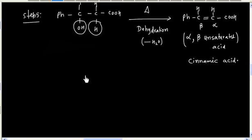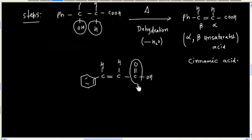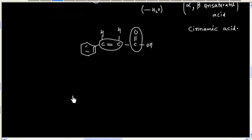The final product has extended resonance. This double bond, this double bond, and the double bond inside the benzene ring are in conjugation. That's why mild heating is required for dehydration.